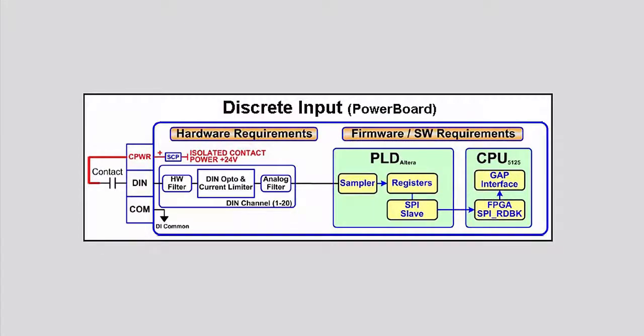The discrete input channels are designed for use with 24 volt DC signals. These signals designate on or off from an end device such as a button or switch. An isolated contact power voltage supply of 24 volts DC is provided to use with the discrete inputs that require it.